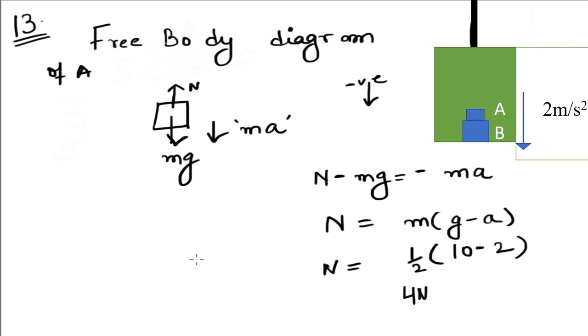Now, let us draw the FBD or free body diagram of the other block, that is block B. Downward acting is its own weight, that is mg, and normal reaction force that occurs due to the contact of A, which also acts downward in this case.